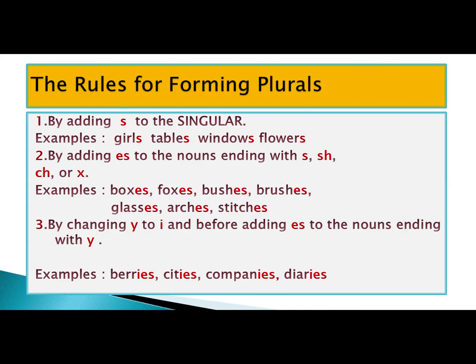Rule number two: by adding ES to nouns ending with S, SH, CH, or X. For example, box ends with X — it changes into boxes. Fox, also ending with X, changes into foxes. Bush ends with SH — we add ES and make it bushes. Brush, ending with SH, becomes brushes. Glass ends with S — we add ES and make it glasses.